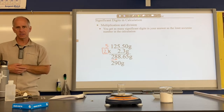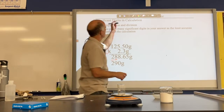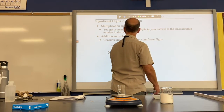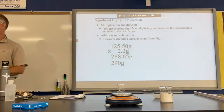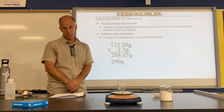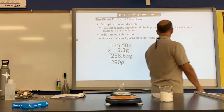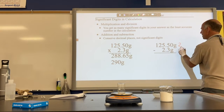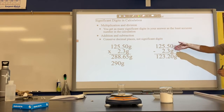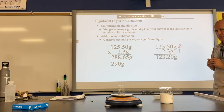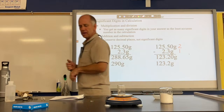The idea is that the answer can't be more accurate than the least accurate measurement. For addition and subtraction: significant digits do not matter — decimal places do. Using the same numbers but now subtracting: one number has two decimal places, the other has one decimal place. After subtracting, you only get as many decimal places as the fewest decimal places in the setup, which is one. The answer is 123.2.